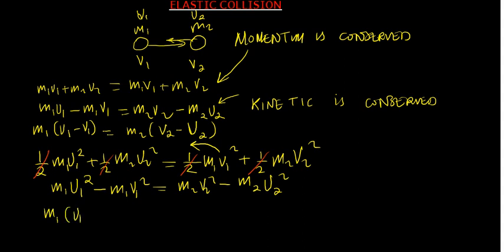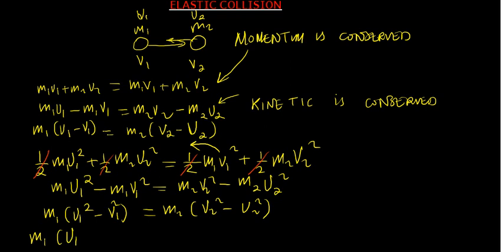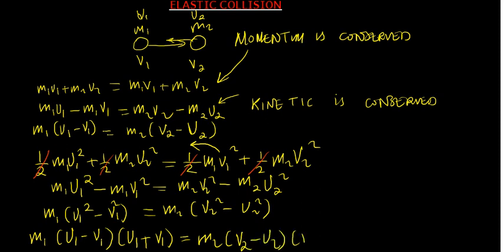Using the difference of two squares — X² − Y² = (X−Y)(X+Y) — we can write: M1(U1 − V1)(U1 + V1) = M2(V2 − U2)(V2 + U2). Let's call this equation 2. We will now divide equation 2 by equation 1.